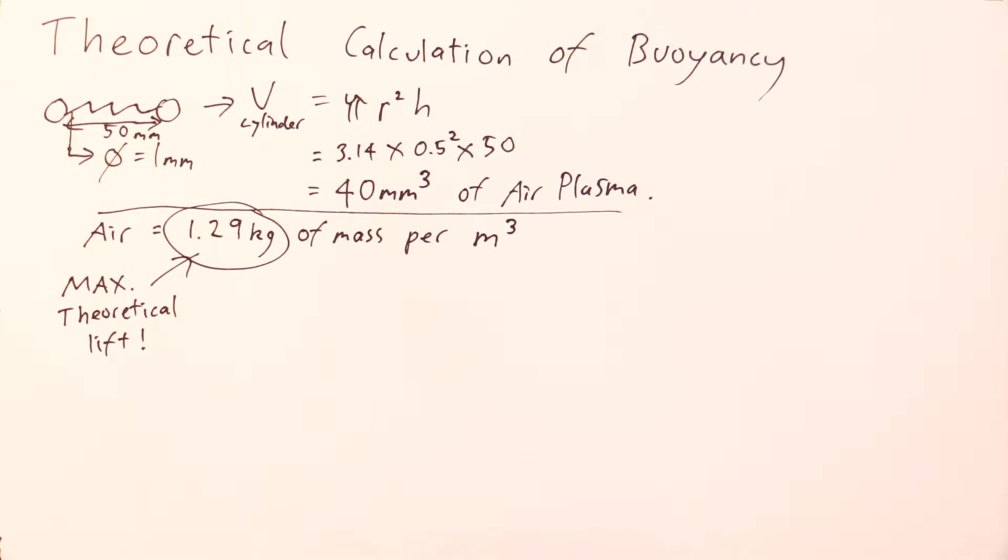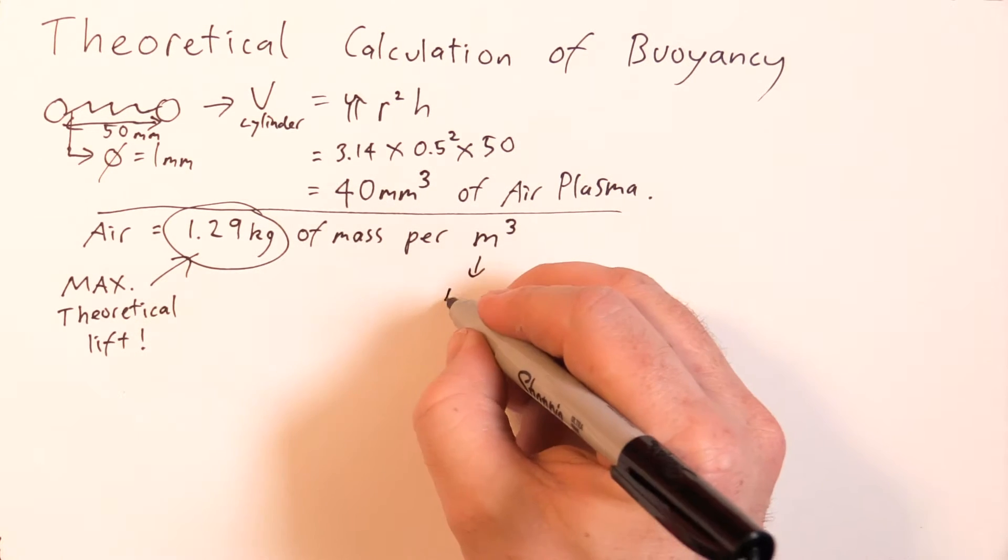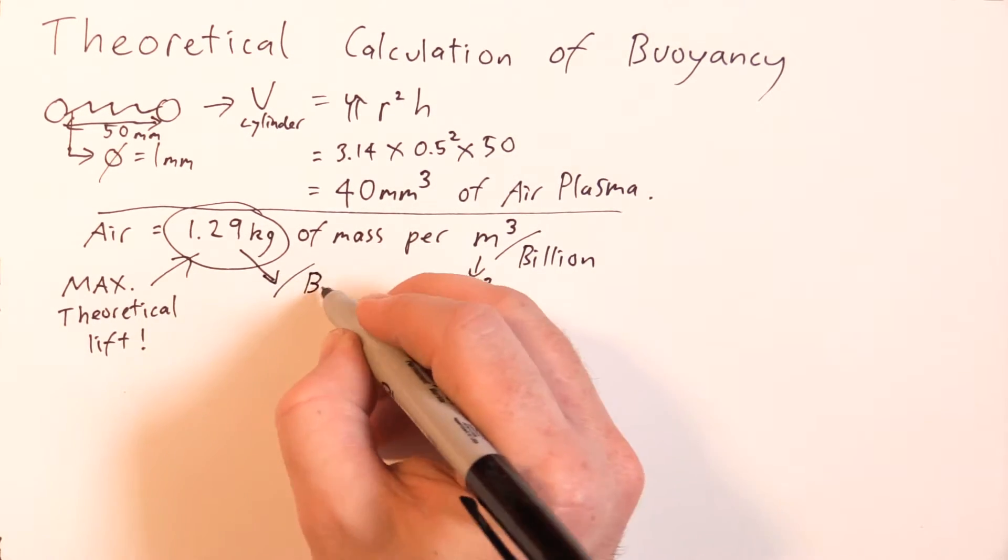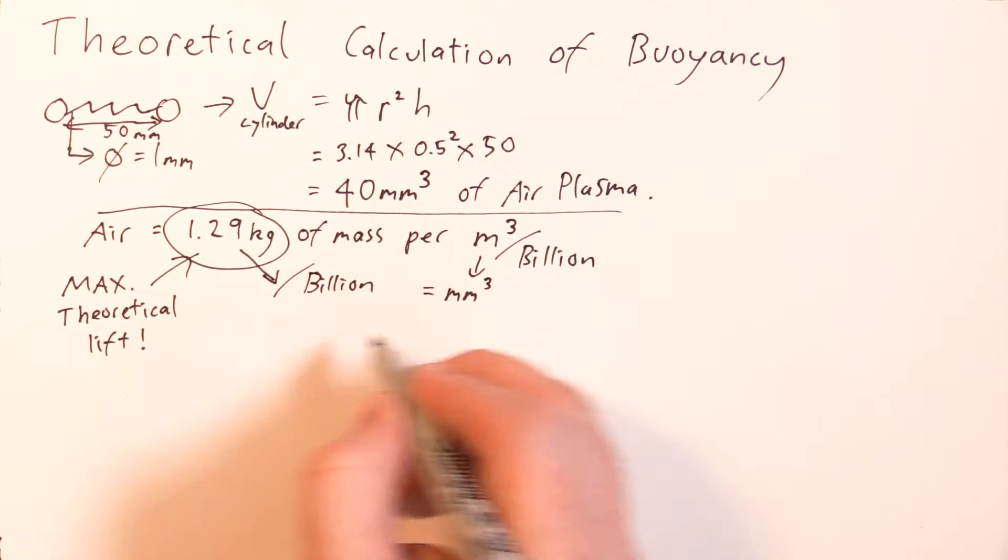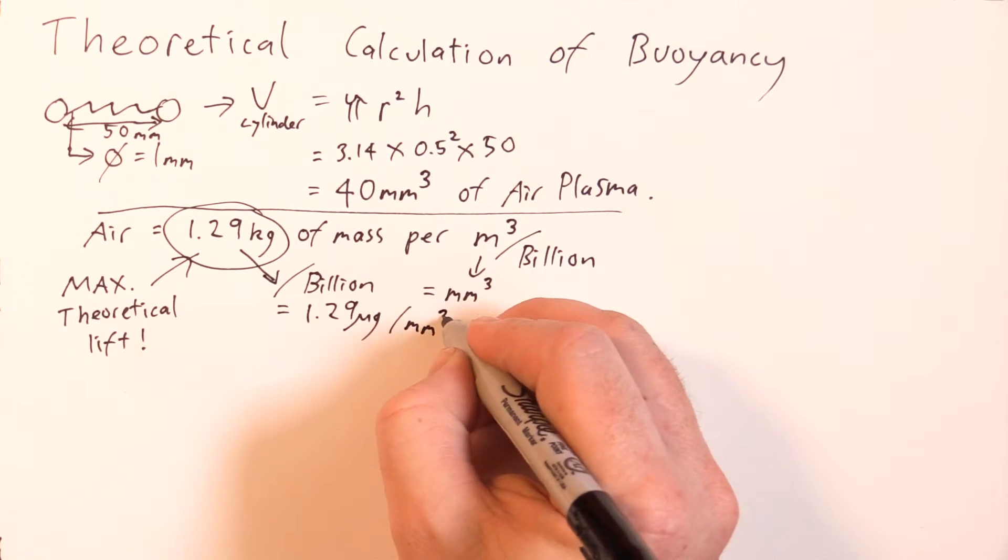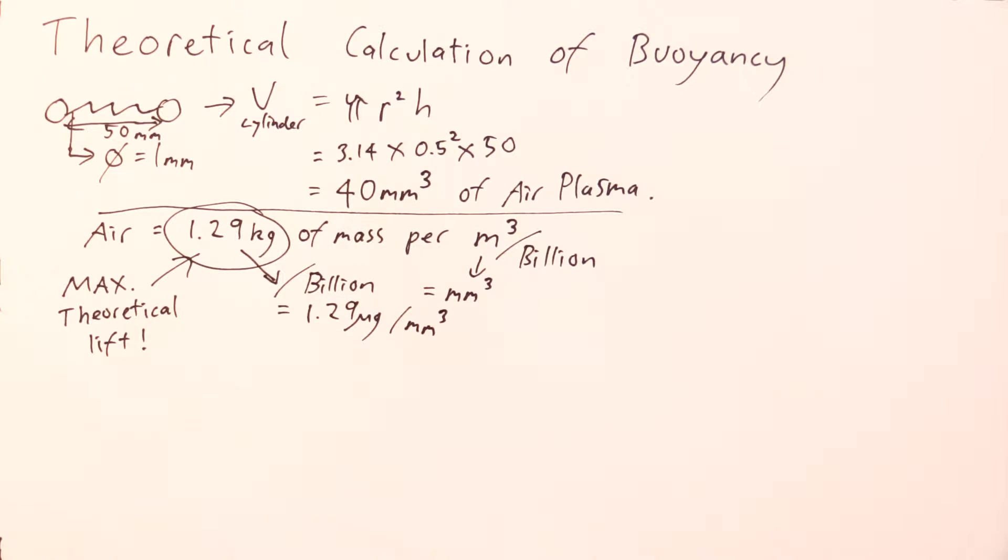The plasma we have here isn't in cubic meters but cubic millimeters, so we need to divide by 1 billion to obtain cubic millimeters. For consistency, we also divide the 1.29 kilograms by 1 billion, and this gives you 1.29 micrograms of lift per cubic millimeter.